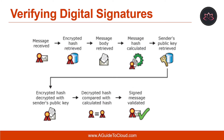So what are the steps involved in verifying a digital signature? Here is an example which summarizes the steps. First, the message is received. Then the digital signature containing the encrypted hash value is retrieved from the message. The message body is also retrieved. Next, the hash value of the message is calculated. The sender's public key is retrieved from the email. The encrypted hash value is decrypted with the sender's public key. The decrypted hash value is then compared against the hash value produced on the recipient's side. Finally, if the values match, the message is validated.